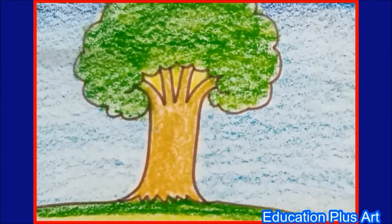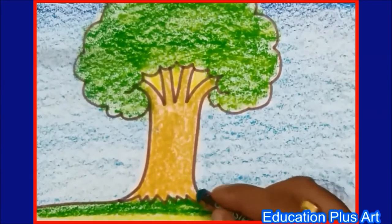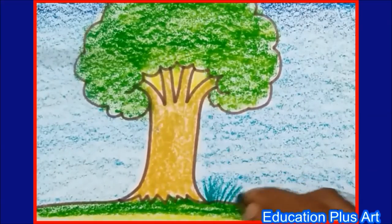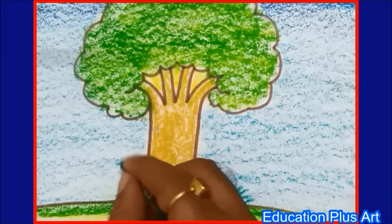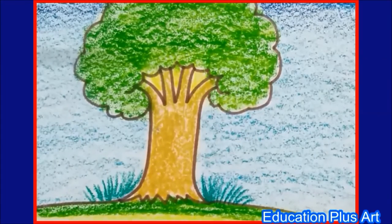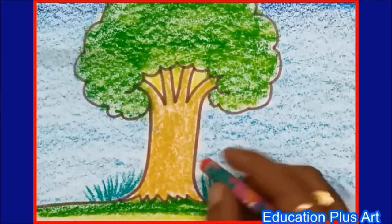Now few grass by a dark green color, showing on the land, by giving strokes. And few flowers.